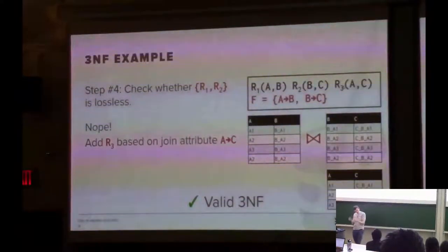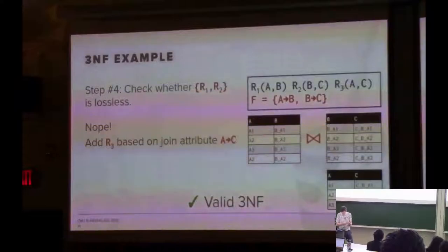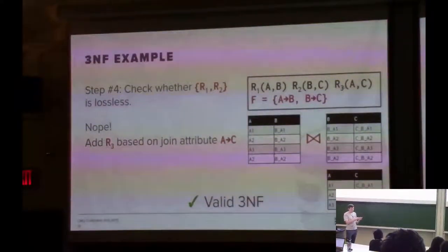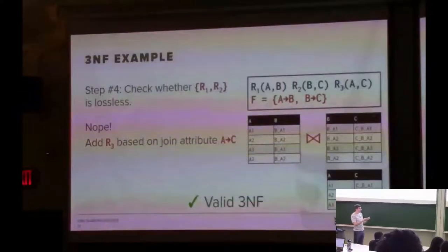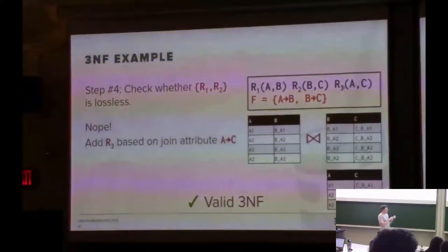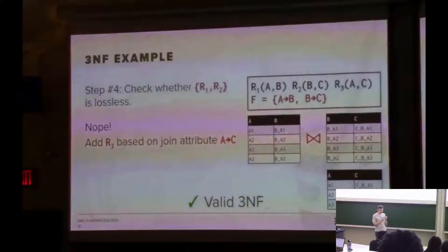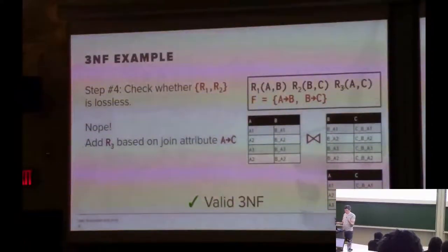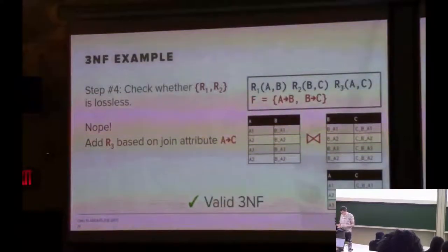The key difference between 3NF and BCNF: in 3NF you will have redundant information, but you can guarantee that all your dependencies are preserved. In BCNF you have no anomalies but may end up losing some functional dependencies.